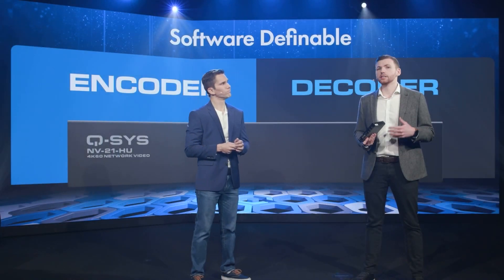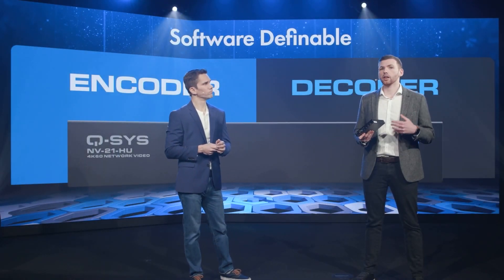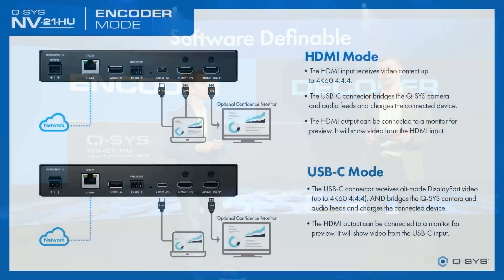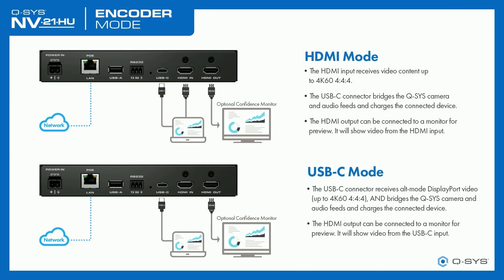What that determines is the video input source that you're going to either encode or send to your local confidence monitor. In encoder mode, this decides whether USB or HDMI is going off to the network. And just like the MV32, you can have a local confidence monitor on that HDMI output. It doesn't matter if we're in USB or HDMI mode for the content — we can do bridging in either of those modes, whether it's an encoder or a decoder.